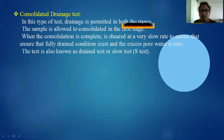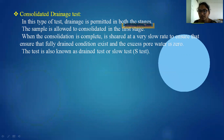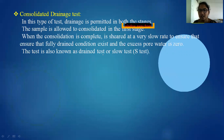The third type is the consolidated drained test. Here, drainage is permitted and the sample is allowed to consolidate in the first stage. When consolidation is completed, the soil is sheared at a very slow rate to ensure that fully drained conditions exist and excess pore water pressure is zero. This test is also known as the drained test or slow test.